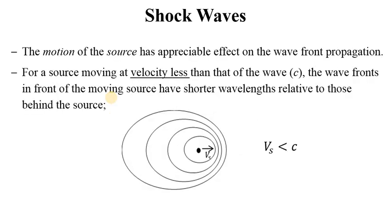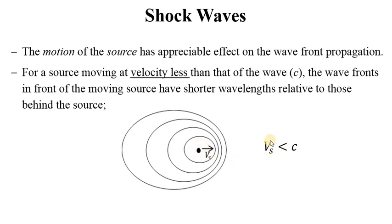The motion of the source has effects on wave front propagation. When the source moves at a velocity less than that of the wave — that is, Vs is less than C — the wave fronts in front of the moving source have shorter wavelengths relative to those behind the source, as visible in the diagram.